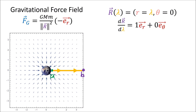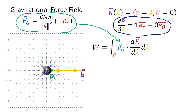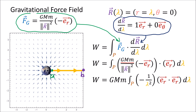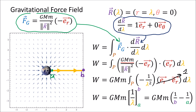We take the integral equation for work, plug in the field formula and the tangent vector er, and get our expression. All the constants come outside the integral, and the radius equals the lambda parameter, so we substitute that in. Then er dot er goes to one, and the antiderivative of negative one over lambda squared is just one over lambda. So we evaluate this integral at the endpoints of the curve.